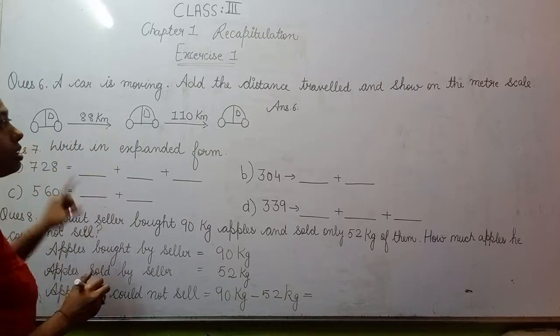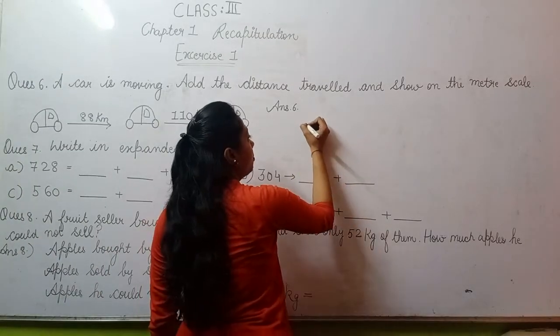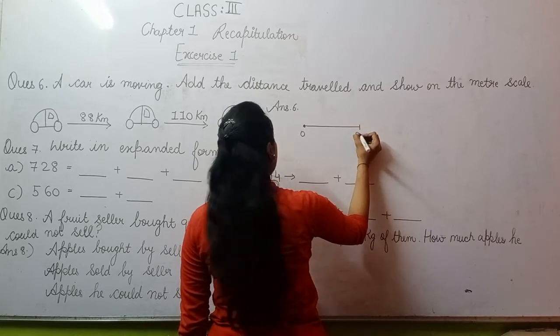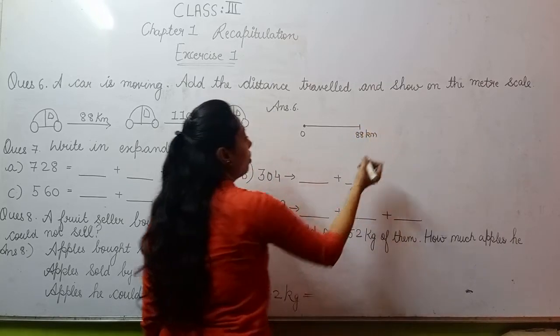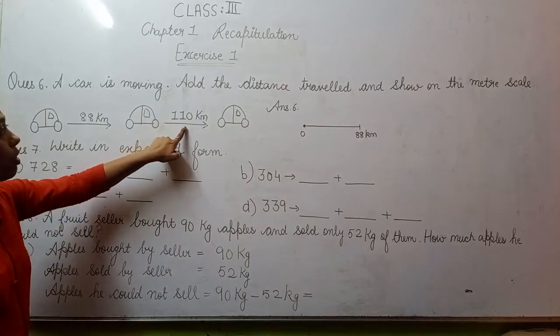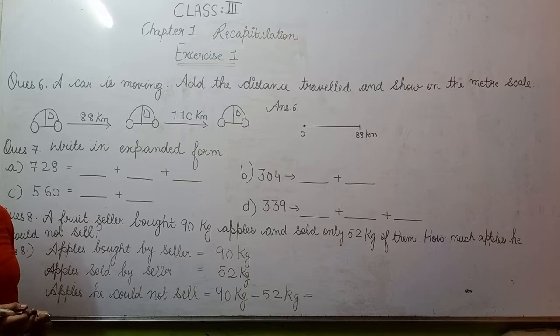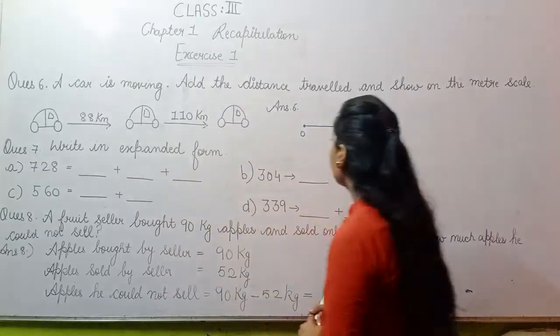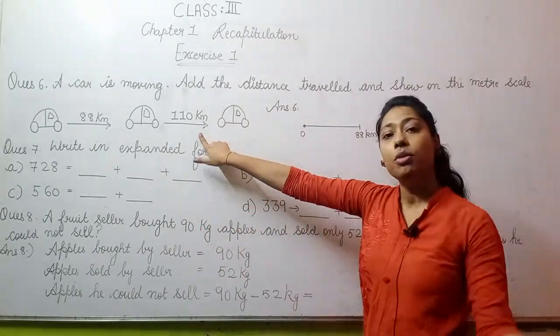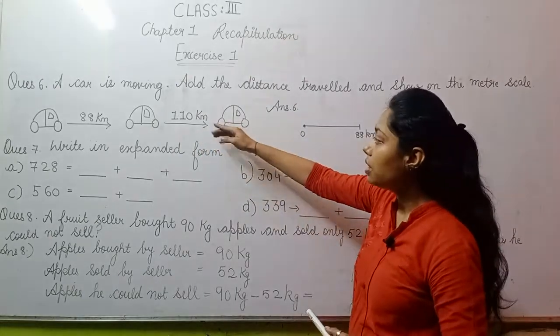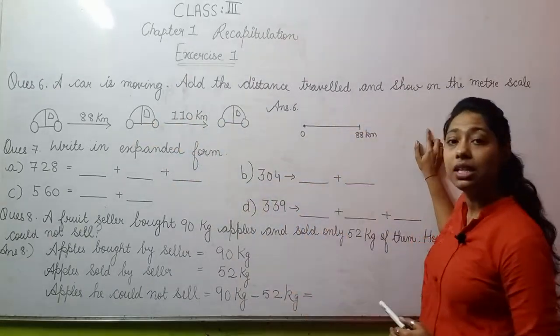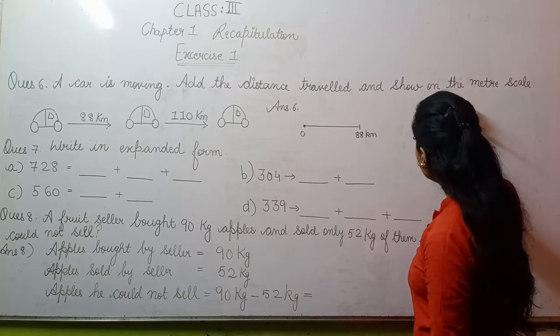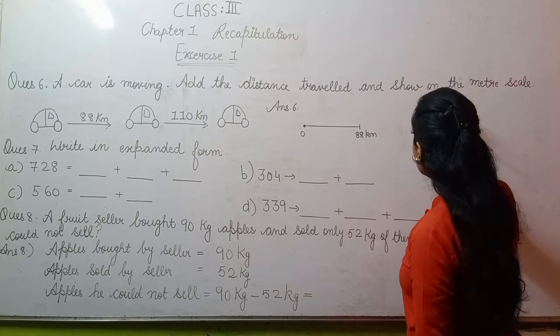So, first this car has 88 kilometers traveled. Okay? So, you are going from zero. From zero, first they traveled 88 km. Okay? And after that they traveled 110 km more. So 88 km first, and then from here they went 110 km more. But see here, it wasn't at 0, so I can't directly write 110. What will I do? To the 88 km, I will add 110 km. 8 plus 0 is 8, 8 plus 1 is 9, and 1.